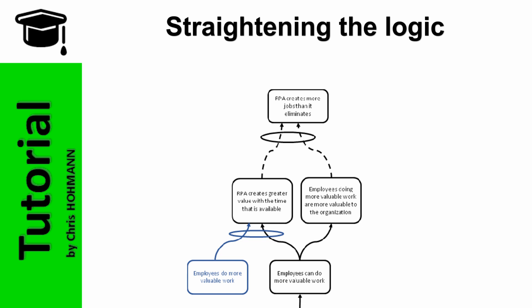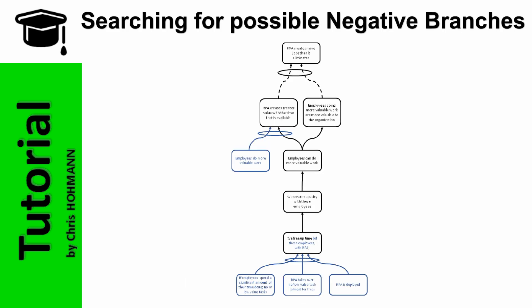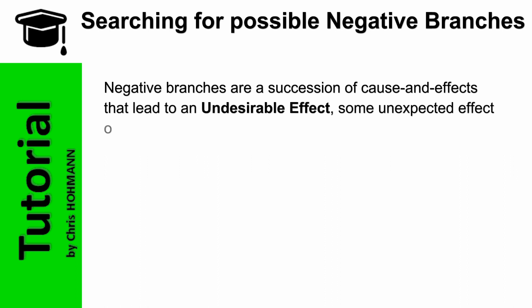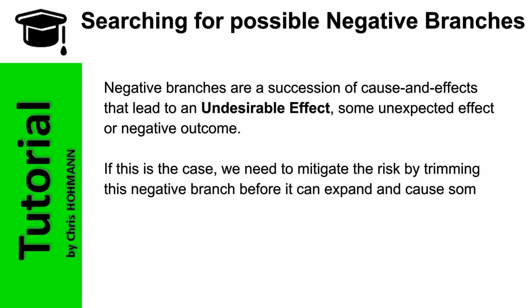So I let it as it is, but to show that it's not correct, I use dotted lines. Next, we'll check if negative branches can grow. Negative branches are a succession of cause and effects that lead to an undesirable effect, some unexpected effect, or a negative outcome. If this is the case, we need to mitigate the risk by trimming this negative branch before it can expand and cause some undesirable effect.